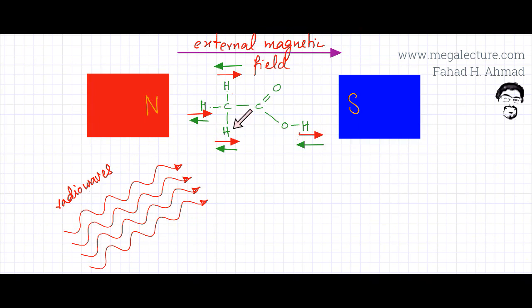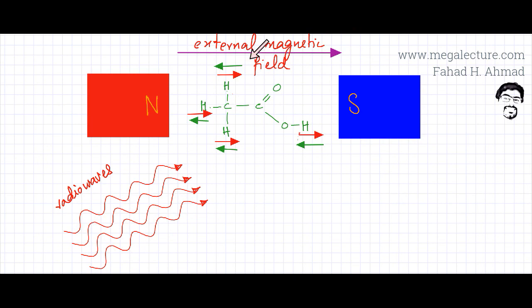Energy from radio waves is gained by these protons. The green arrow now represents the opposing magnetic field — the protons are now energetic and can go into opposing spin, which is the high-energy state. This high-energy state can only be achieved if the protons have enough energy to overcome the powerful external magnetic field and start opposing it. So these hydrogen protons are now resonating — gaining energy from radio waves and going into opposing spin.